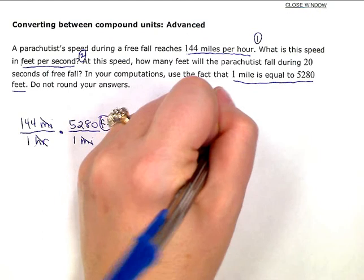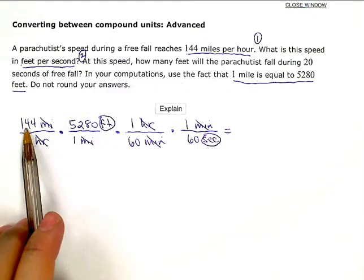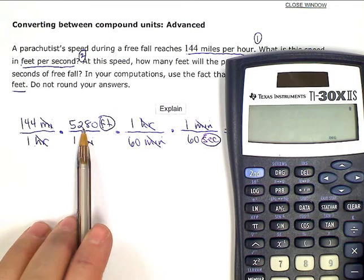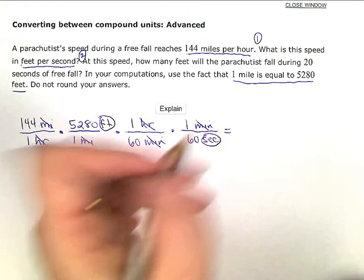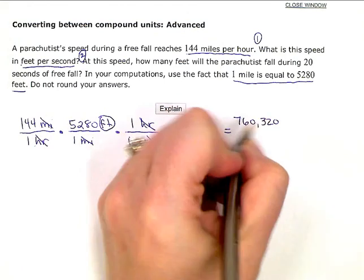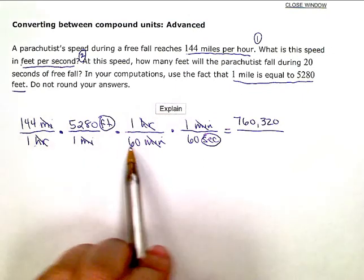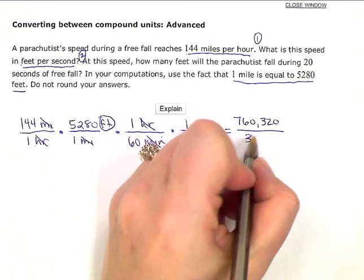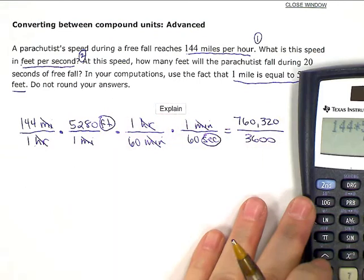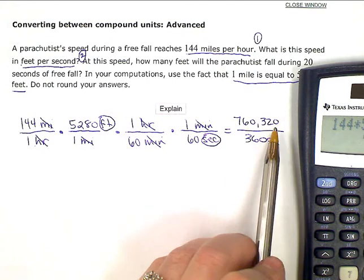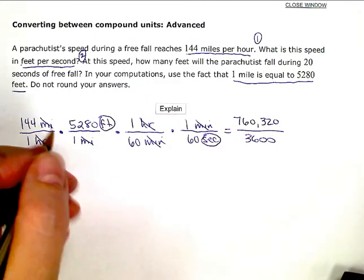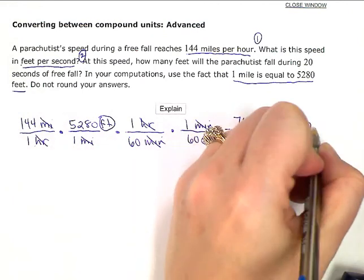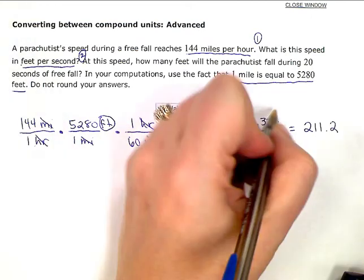So now I just need to do the calculations. So I need 144 times 5,280 or 760,320 in my numerator. In the denominator, I have 60 times 60, which is 3,600. So final answer, I just need to take this 760,320 and divide by 3,600. So divided by 3,600 gives me 211.2. So my final answer is 211.2 feet per second.